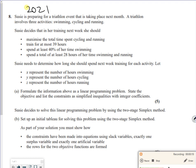It says Susie's preparing for a triathlon event that's taking place next month. It involves three activities: swimming, cycling, and running. There's some information here that we need to build the constraints with. It tells us that X is swimming, Y is cycling, and Z is running. That's good that they've told us that.